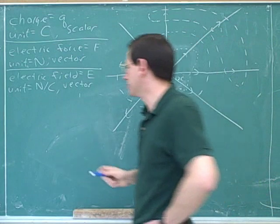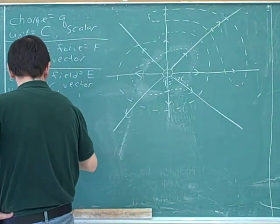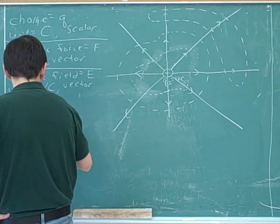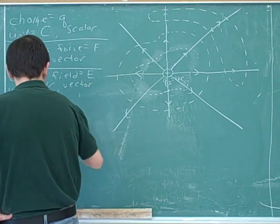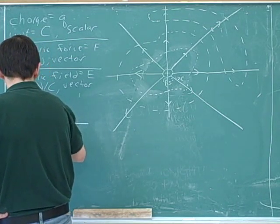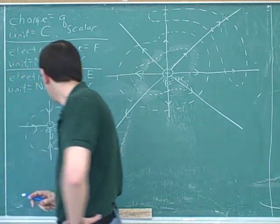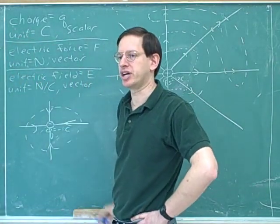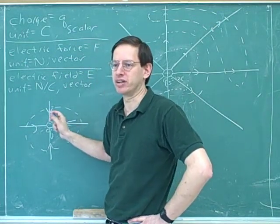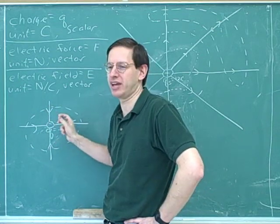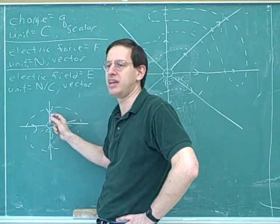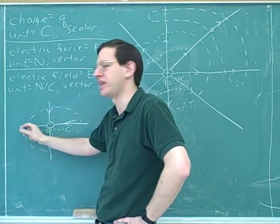We could show the same thing for a negative charge. If you have a negative 1 Coulomb test charge here, the net amount of electric field lines that is exiting is negative 4, because nothing is exiting — everything is only entering. So if we're considering the net amount that is exiting, a mathematician would call that negative 4, because this is entering: negative 1, negative 1, negative 1.